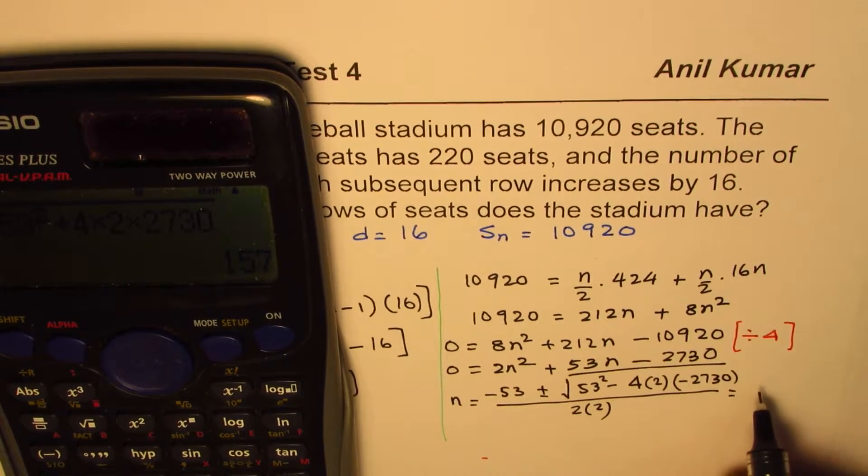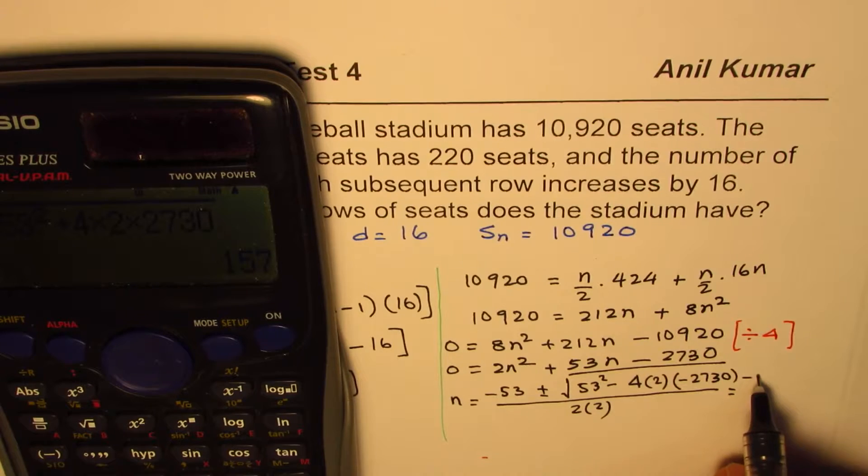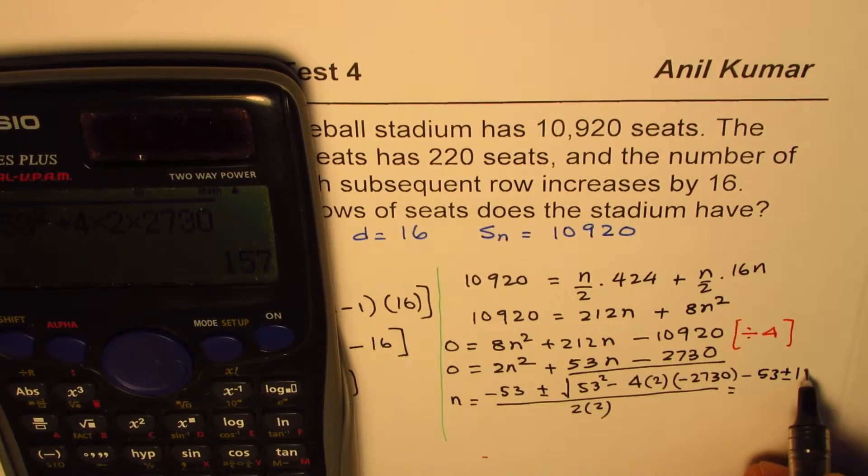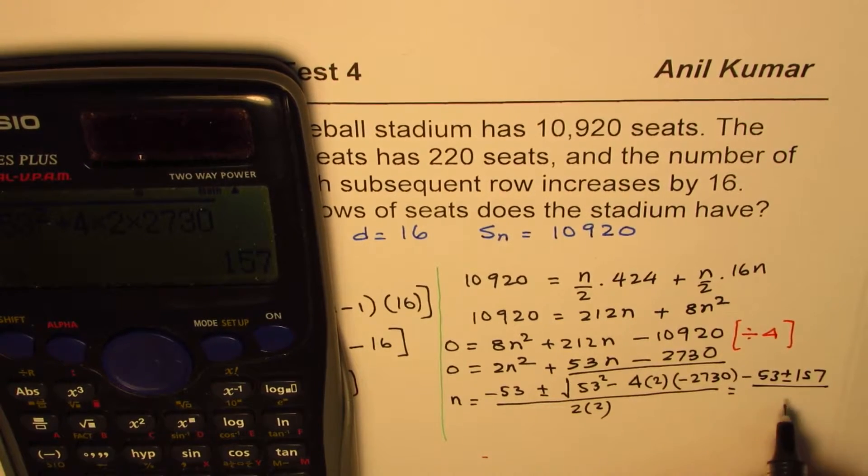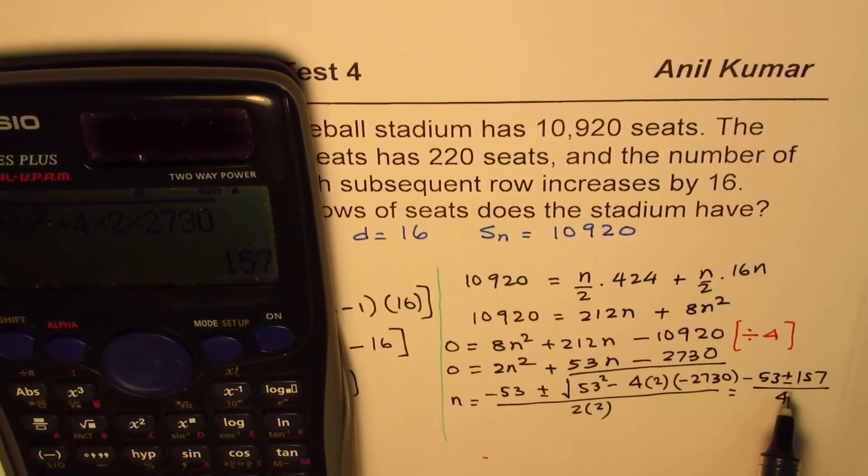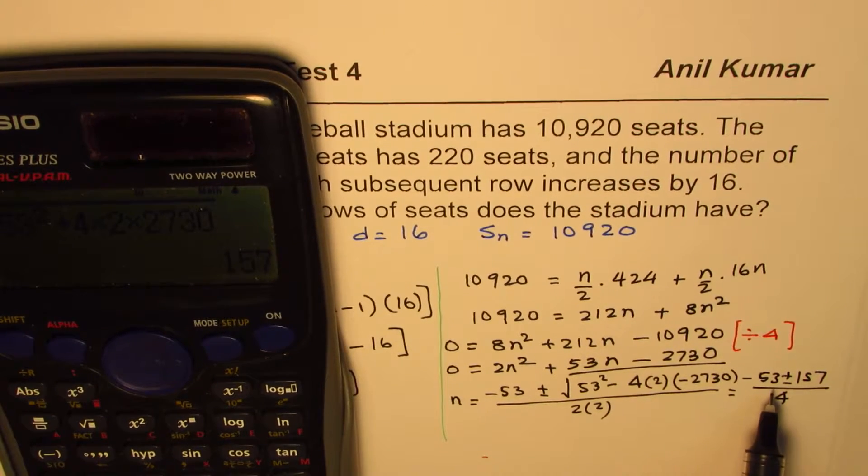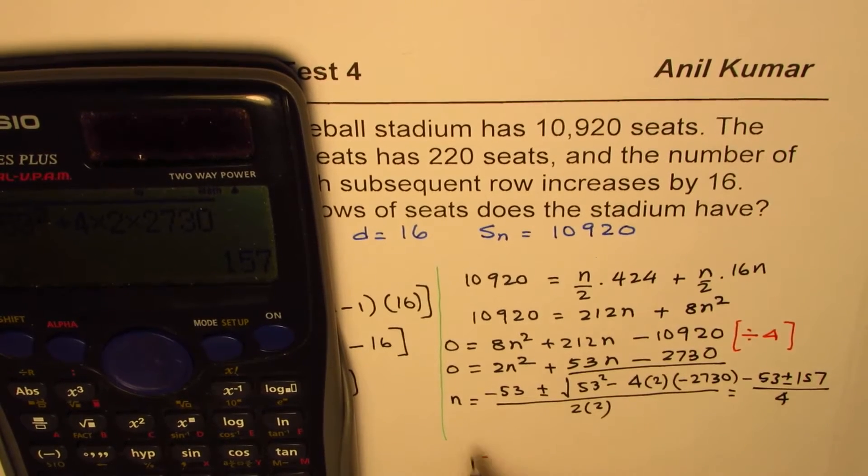So we get 157. So we could write this as minus 53 plus minus 157 divided by 4. So we cannot take the negative value. It is some positive value. So we'll use the positive value.